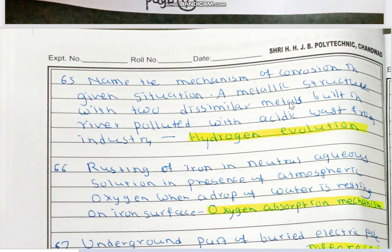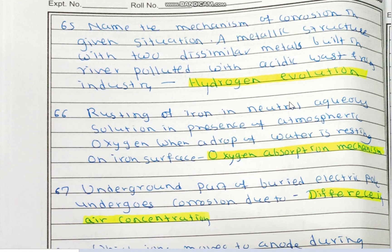Name the mechanism of corrosion: a metallic structure with two dissimilar metals built in a river polluted with acidic waste from industry. Because of acidic waste, it is the hydrogen evolution type of mechanism, and it is immerse corrosion because two dissimilar metals are present. Rusting of iron in neutral aqueous solution in the presence of atmospheric oxygen, when a drop of water is resting on iron surface, is the oxygen absorption mechanism — also a second type of immerse corrosion.